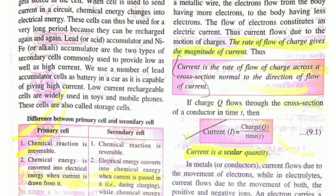Current is the rate of flow of charge across a cross section. This is the definition of current which is very important. The formula to calculate current is charge upon time, Q/t. And always remember this: current is a scalar quantity.